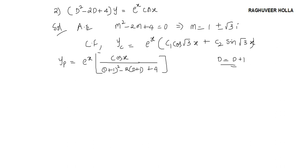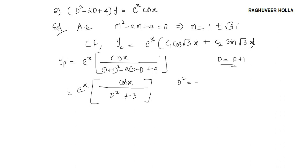Let us try to simplify the denominator. Expanding, I get d squared plus 2d plus 1, minus 2d, minus 2, plus 4. When I cancel terms out, I am left with only d squared plus 3 in the denominator. Now let us substitute d squared as minus 1 squared. I get e to the power of x times cos x divided by (minus 1 plus 3), which gives one half of e to the power of x times cos x.